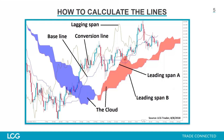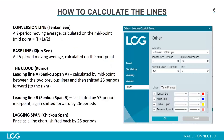You also have the baseline, which is a longer-term average that lags the price a bit further, and the conversion line, which is a shorter-term average of prices. Then there's the lagging span, which is the price shifted over to the left. These are all the indicator settings as you see them on the LCG Trader, where you can change the time periods and colors for these different elements.